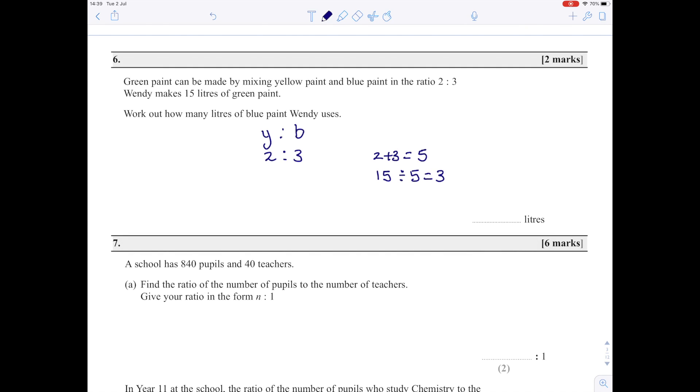Each part is 15 divided by 5, which is 3. We want the number of liters of blue paint, so those 3 parts times 3 liters each gives 9 liters of blue paint. As a check, yellow would be 2 times 3, which is 6 liters, and 6 plus 9 gives us the original 15 liters.